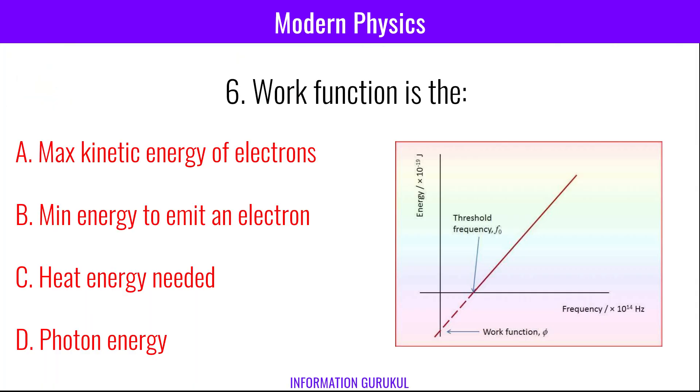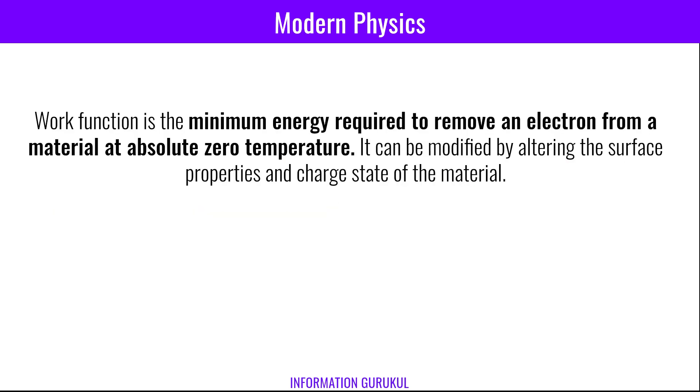Work function is the minimum energy to emit an electron. The work function is the minimum energy required to remove an electron from a material at absolute zero temperature. It can be modified by altering the surface properties and charge state of the material.